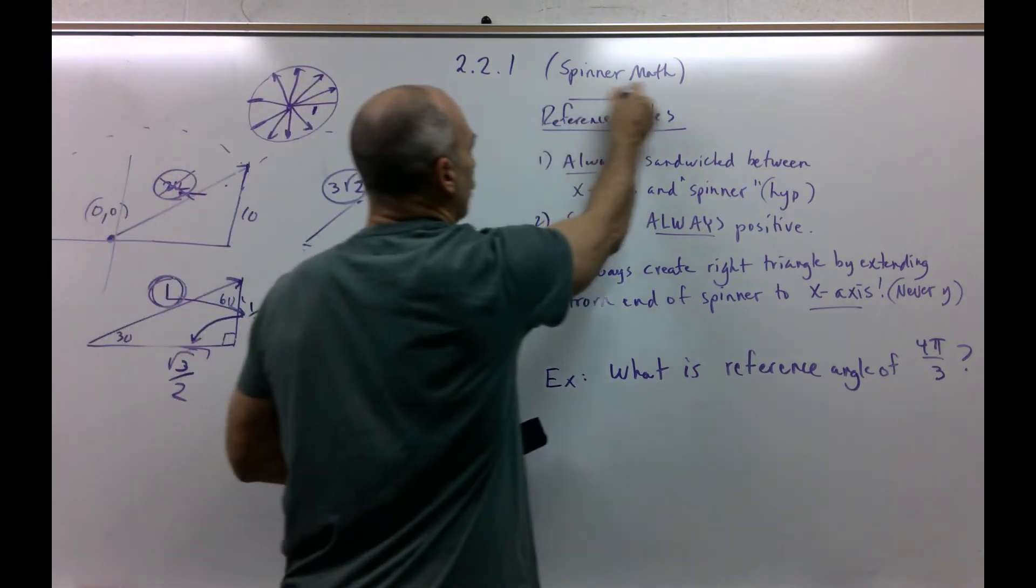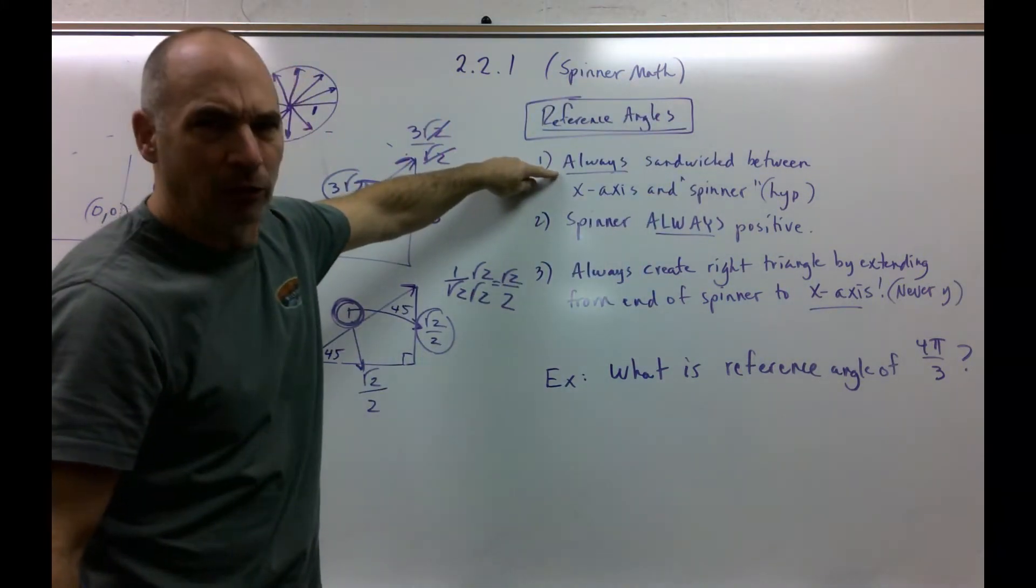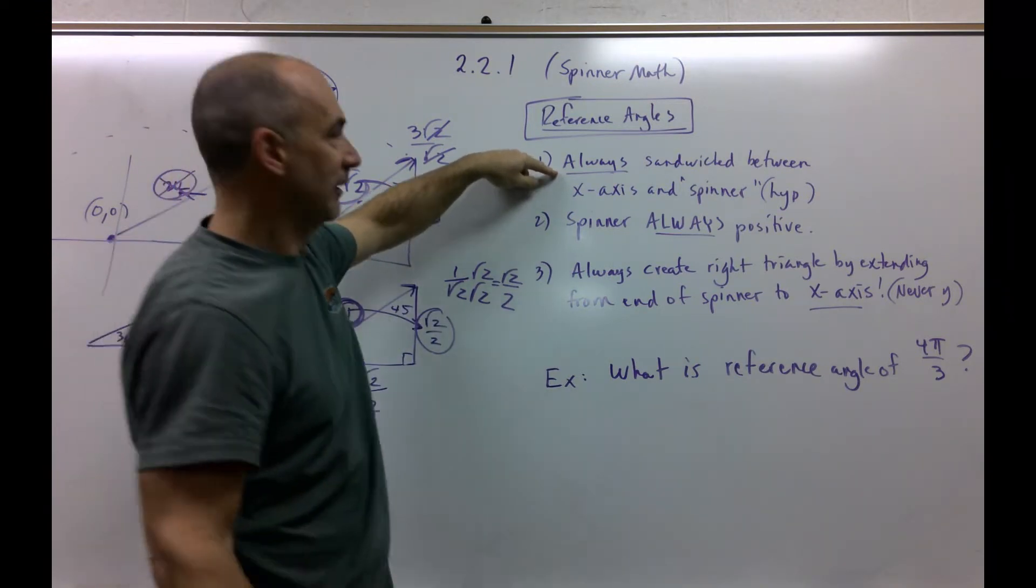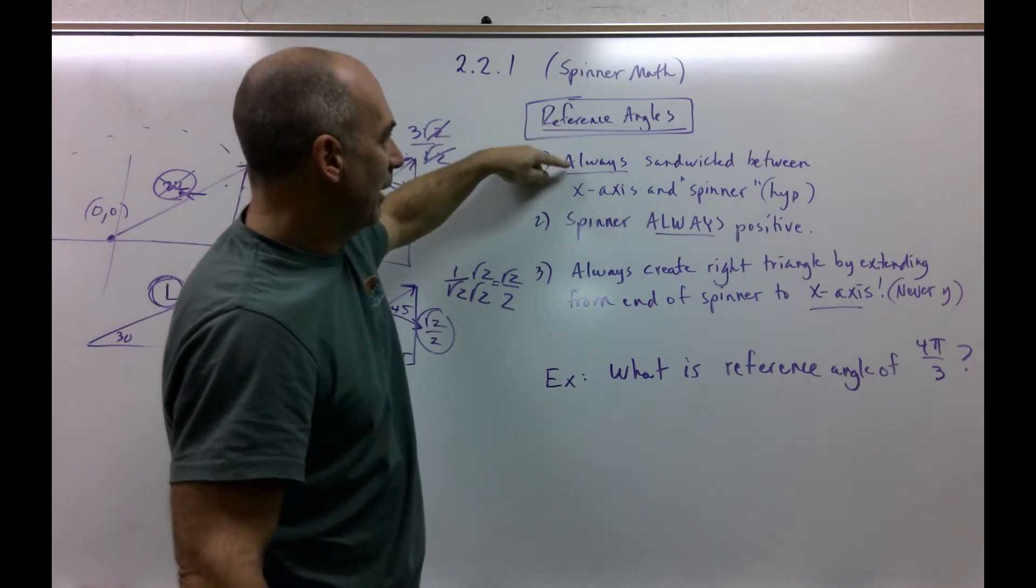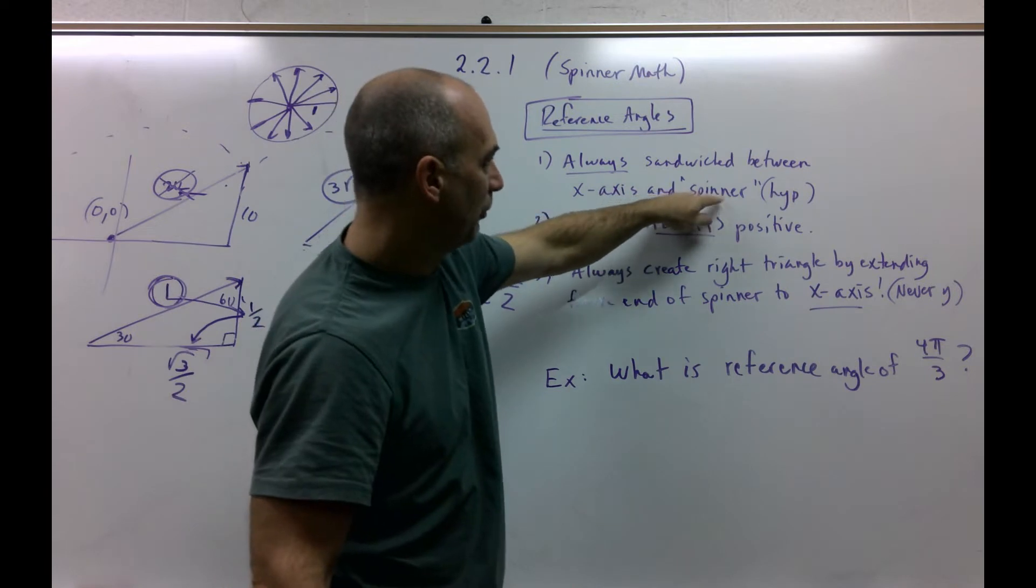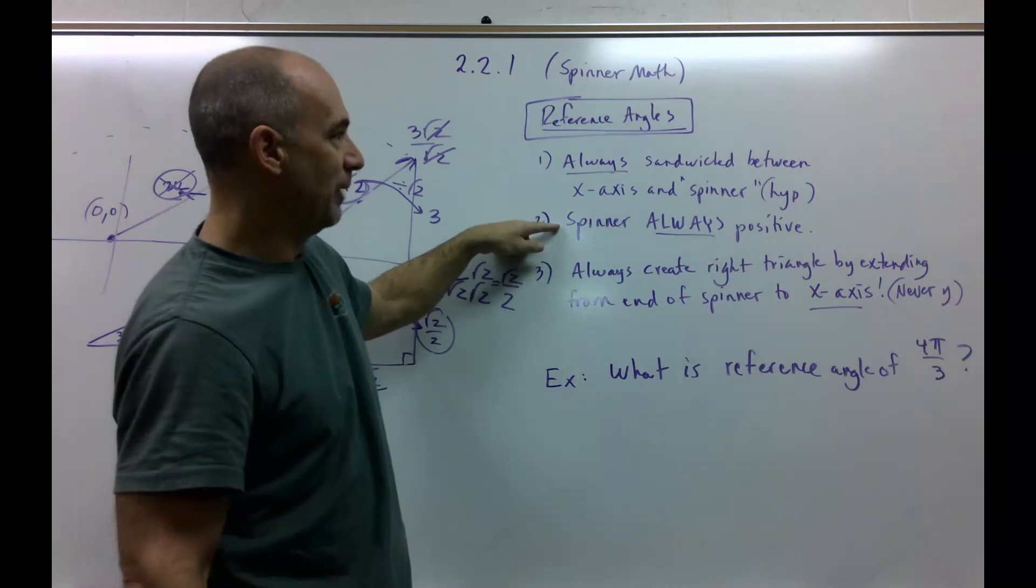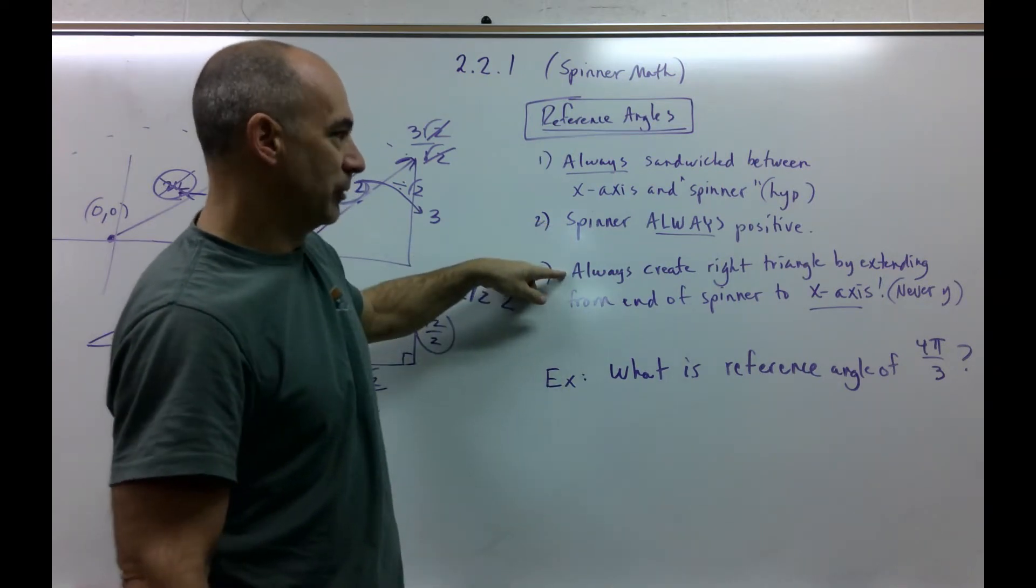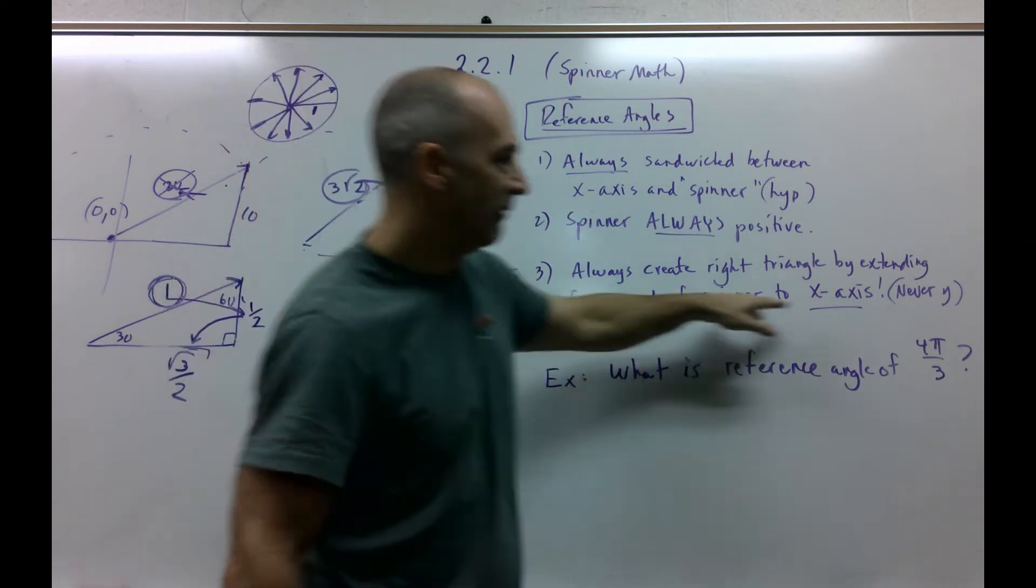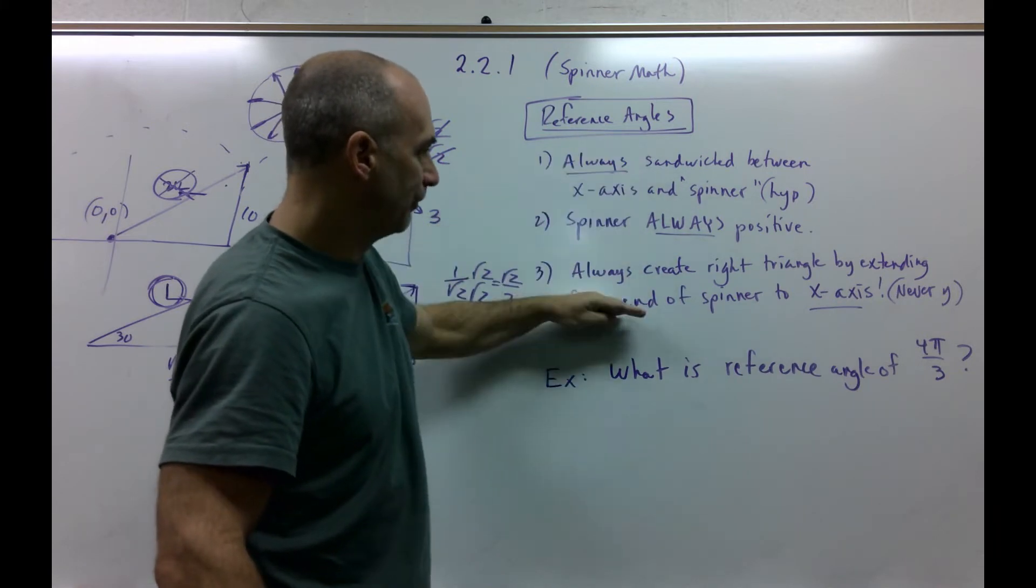But now we're going to develop this idea of reference angles. This is huge in the world of trigonometry. And the beautiful thing is, not very often in math do you get the word always to pop up and be true. But watch this. The reference angle is always sandwiched between the x-axis and the spinner. The spinner is the hypotenuse. I'm going to develop that idea in a second. The spinner is always positive. Always create right triangle by extending from the end of the spinner to the x-axis. Never to the y.